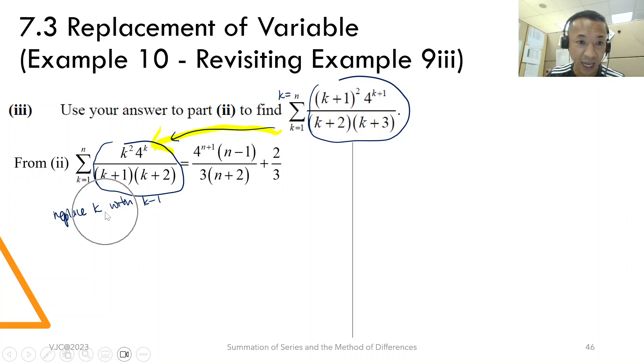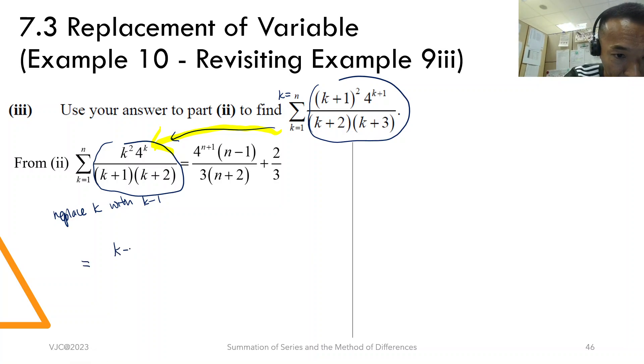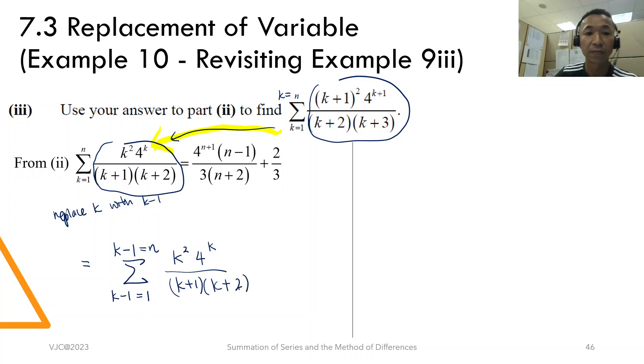When you replace k with k minus 1, you will write this, k minus 1 equals to n, k minus 1 equals to n, k minus 1, k minus 2, k minus 2, k minus 2. Am I right?